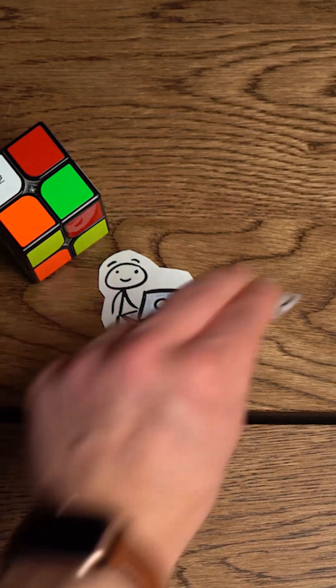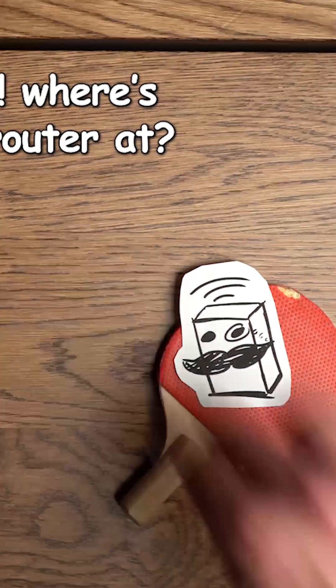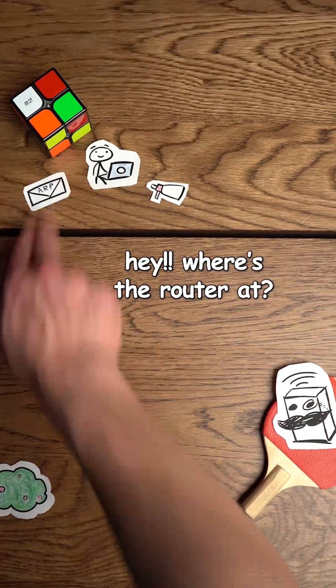Now in order for Steve to find the router, his laptop's gonna have to broadcast something called an ARP message. An ARP message is basically like a megaphone yelling out, hey where's the router at? The router hears him and sends an ARP reply. Here I am!